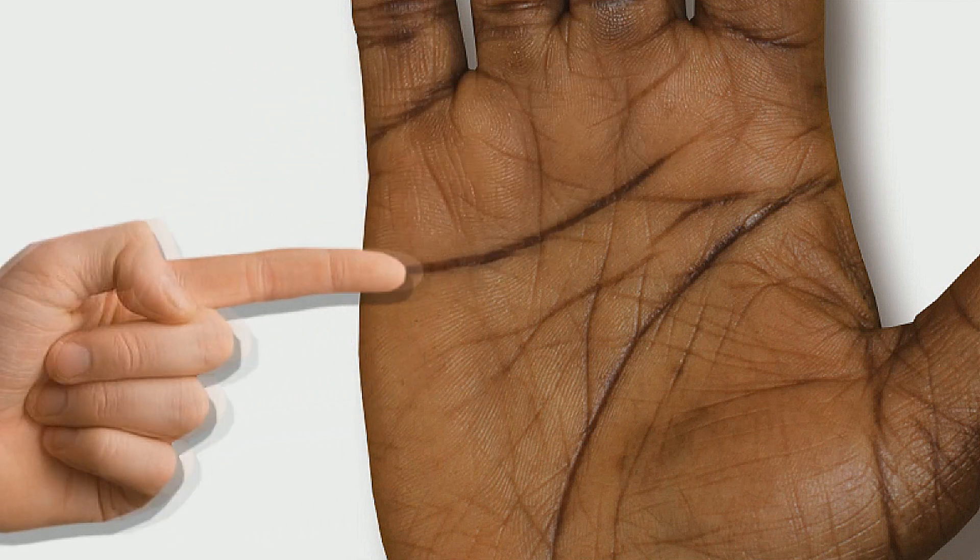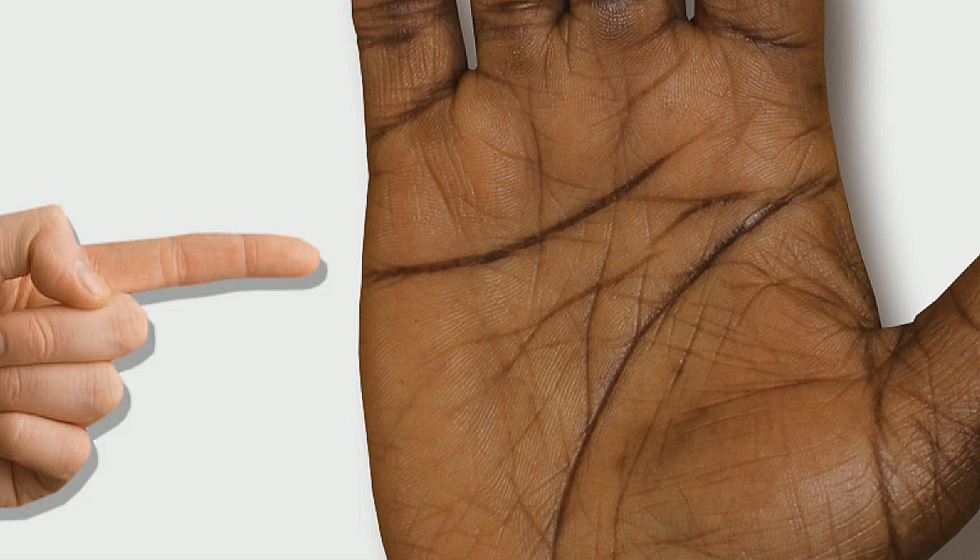It generally makes a nice curve which yours does. You've got a fairly good curve in there. It goes to the outside hand where the flirt lines are.